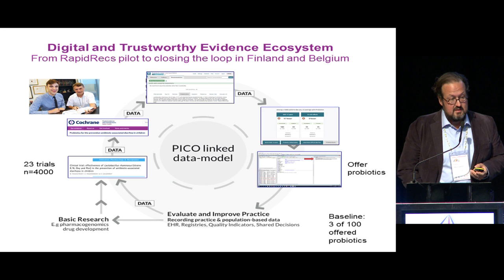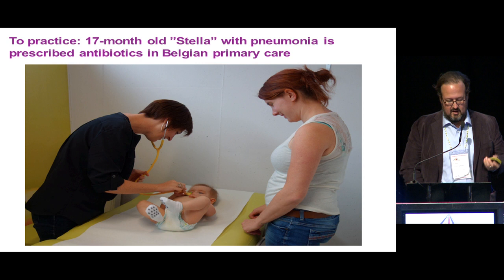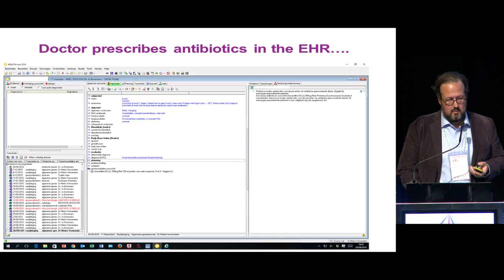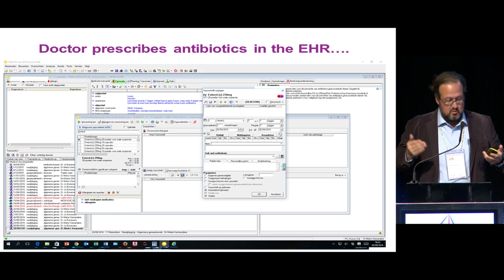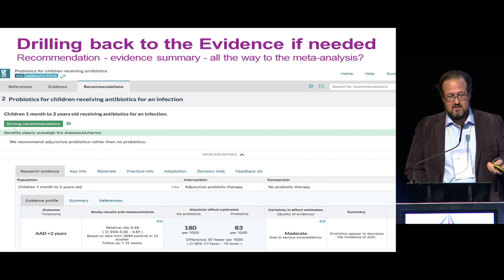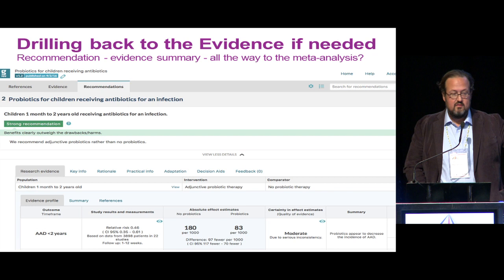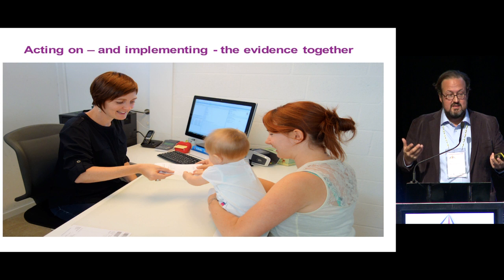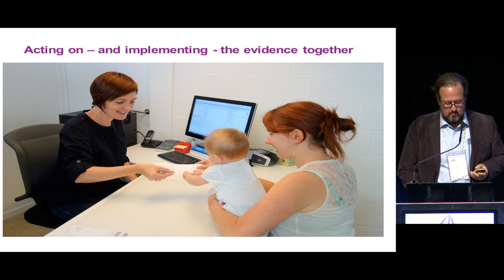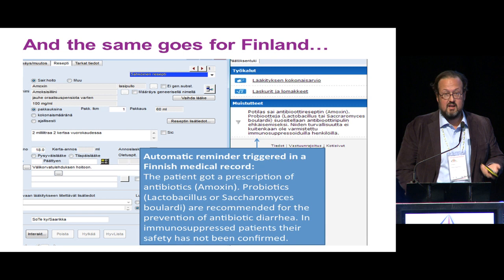The question was: how quickly can we get this into the electronic health record, closing the loop in a pilot in Finland and Belgium? The baseline was 3 out of 100 receiving this currently. So in practice: 17-month-old Stella with pneumonia is prescribed antibiotics in Belgian primary care. In the electronic health record, the recommendation is pushed through automatically, recommending addition of probiotics to the prescription, directly in the EHR. You can drill back to the evidence in the MAGIC app — to the recommendation, evidence summary, or even all the way to the meta-analysis or characteristics of included trials. The same trigger occurs in the Finnish medical record.